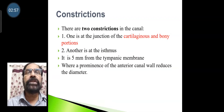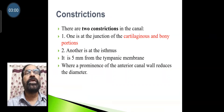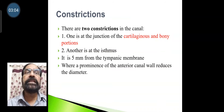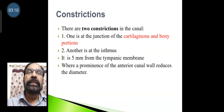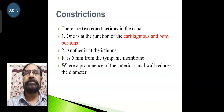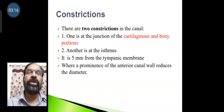There are two constrictions in the external acoustic meatus. One is at the junction of the cartilage and bony portions. The other is at the isthmus, which is 5 mm from the tympanic membrane, where a prominence of the anterior wall reduces the diameter.